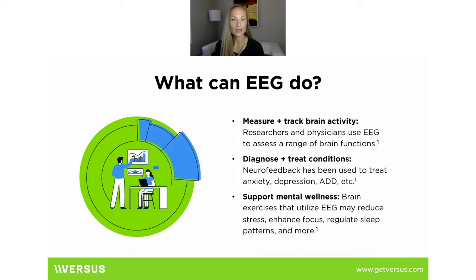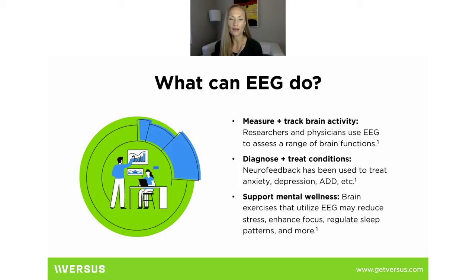There's a ton of literature out there — a quick Google Scholar search will show plenty of published articles and reviews. ADHD and anxiety probably have the top amount of literature behind them, but there's plenty on other aspects. Next is how do we support mental wellness.